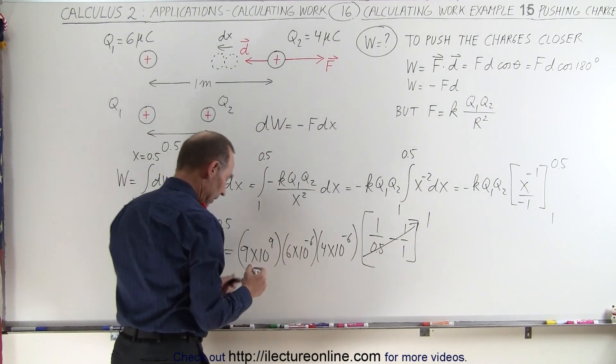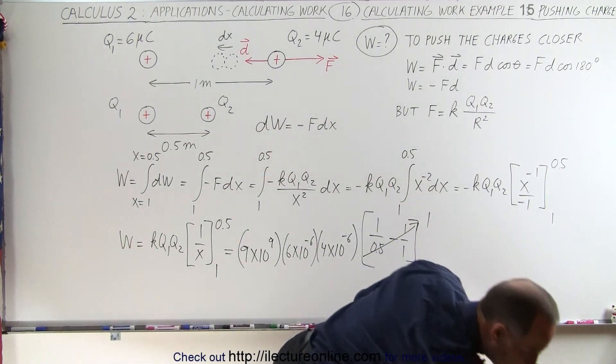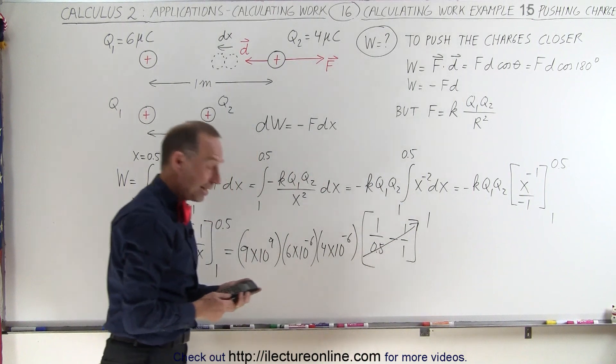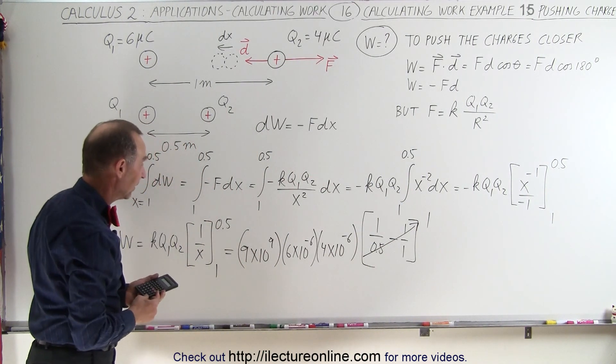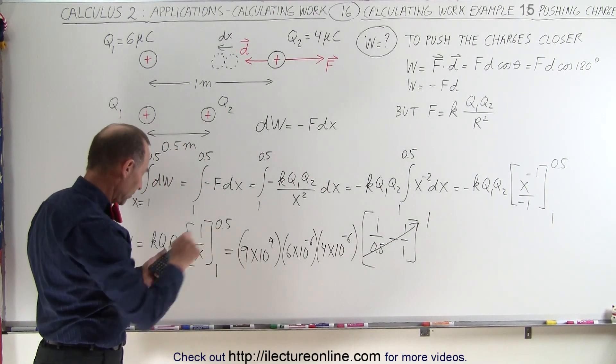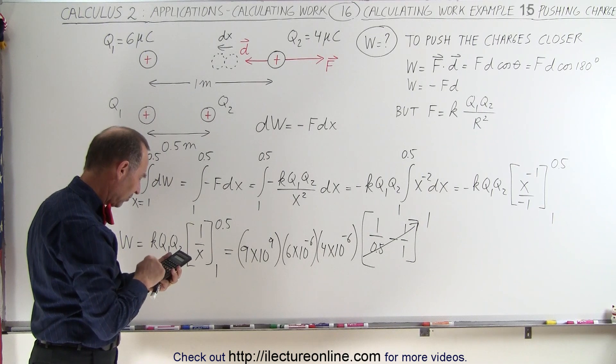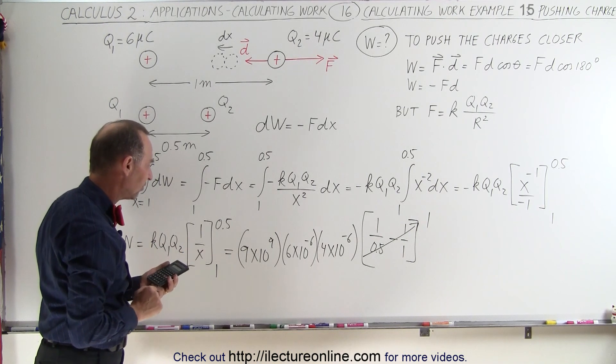And that means we only have to multiply these together. So let's go ahead and do that. Again, calculators are nice. So we have 9 times 6 times 4. 9 times 6 times 4. That's 216.